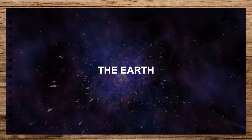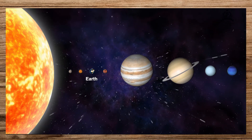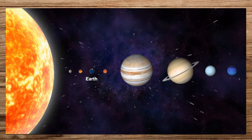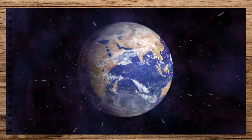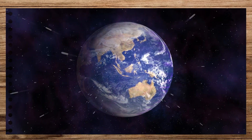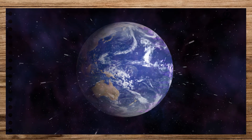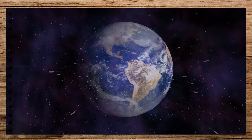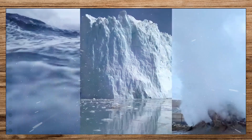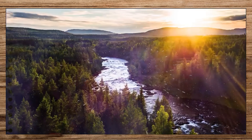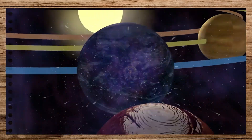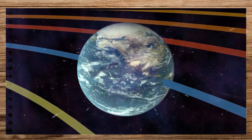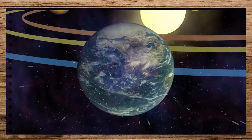The Earth is the third planet from the Sun and is the fifth largest in the solar system. It is the largest among the inner planets. The Earth is our home and is unique in the solar system. Its uniqueness is due to its best location with reference to the Sun and favorable environmental conditions for the origin and survival of various forms of life. The rotation of the Earth on its axis keeps the extremes of temperature between day and night within tolerable limits.